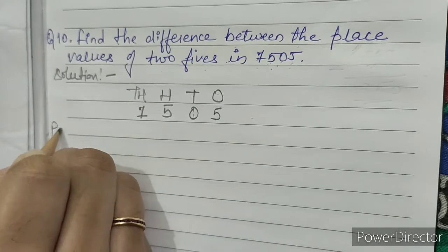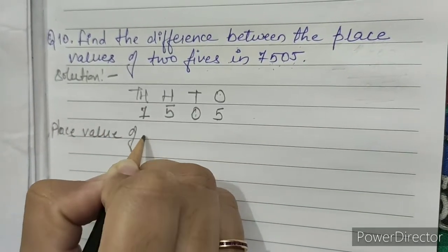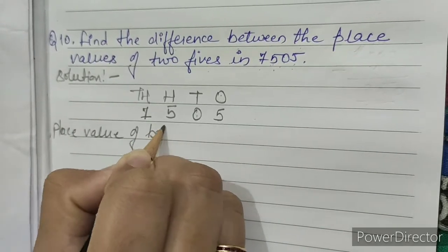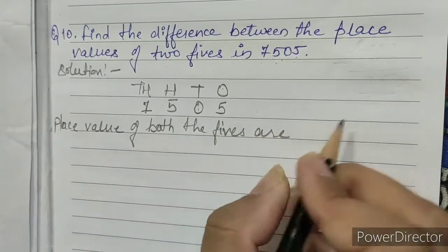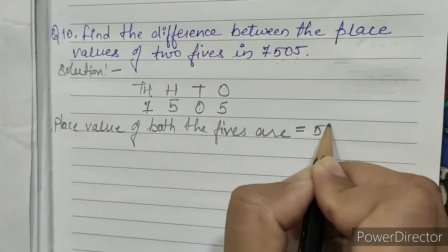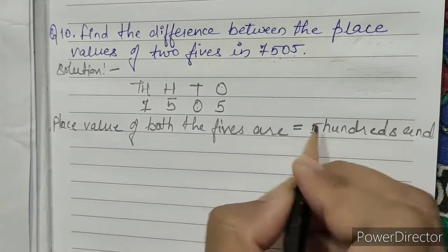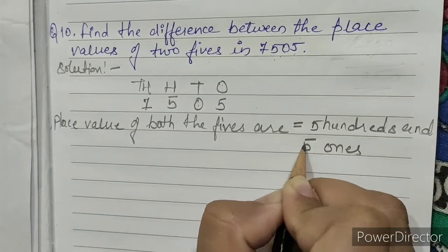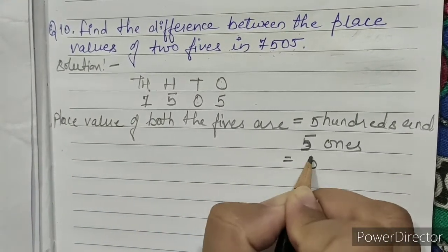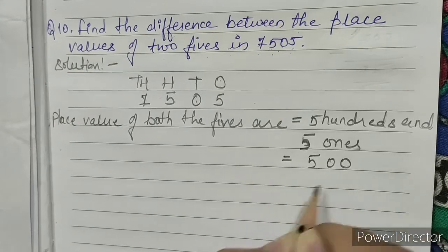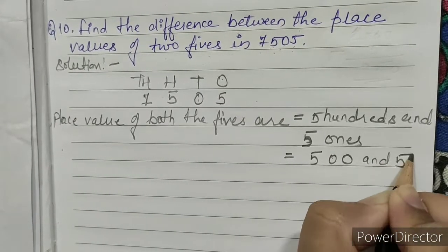Place value of both the fives are equals to 5 hundreds and 5 ones. Five hundreds is 500, and 5 ones is 5.